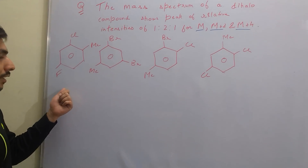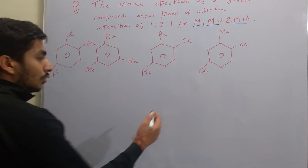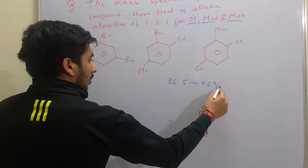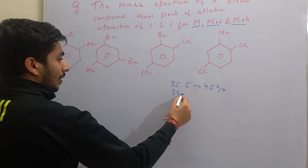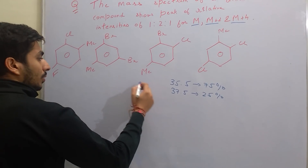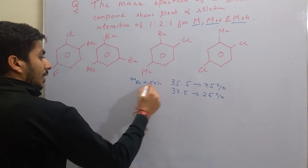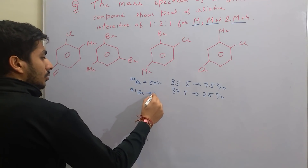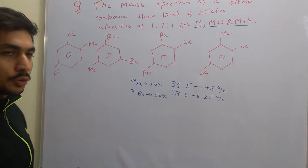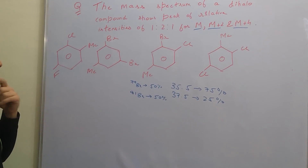Looking at the options, we have chlorine, which has 35 and 37 isotopes. Chlorine-35 has a natural abundance of 75% and chlorine-37 has an abundance of 25% — a ratio of 3:1. Bromine-79 has a natural abundance of roughly 50% and bromine-81 also has a natural abundance of 50%, so they both have equal abundance. Fluorine only has one isotope at 100% natural abundance — fluorine-19.